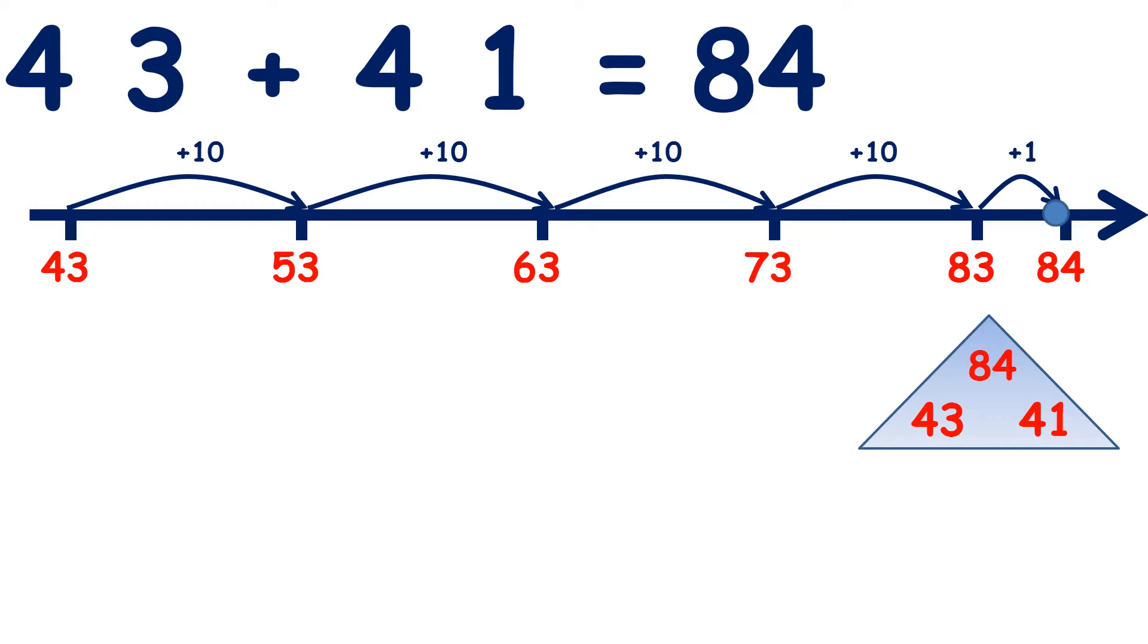So 84 minus 43 should give us 41, or 84 minus 41 should give us 43, and if it doesn't we know that we've done something wrong. So let's check using 84 minus 41. This is checking using the inverse operation because we're subtracting, and subtraction is the inverse operation to addition.